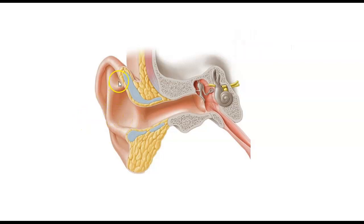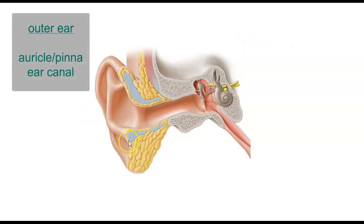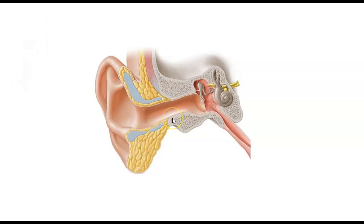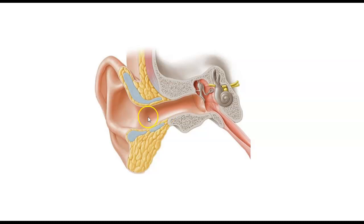The outer ear includes the portion of the ear that we normally see, which is the auricle and pinna area, and the ear canal. The auricle and pinna area is made up primarily of cartilage, and its primary job is to collect and direct sound waves traveling in the air into the ear canal, or external auditory meatus.